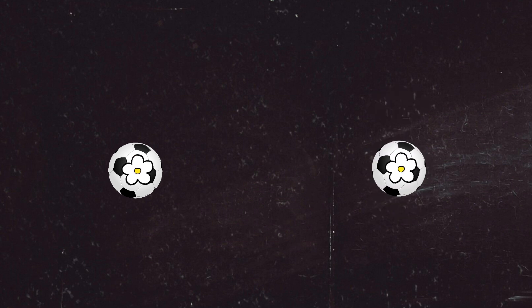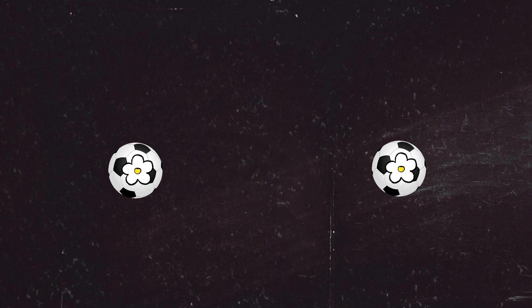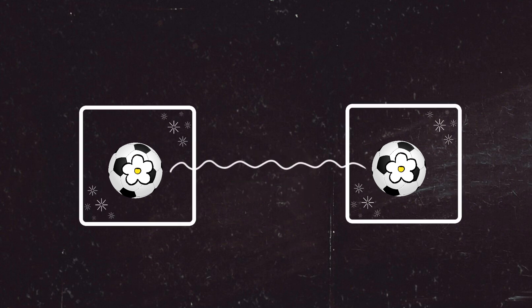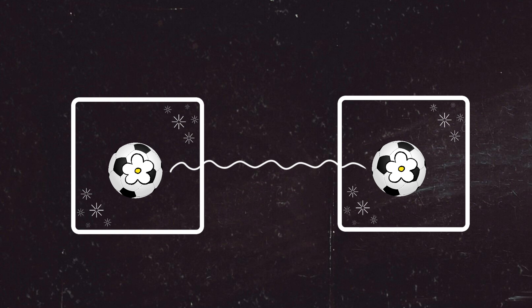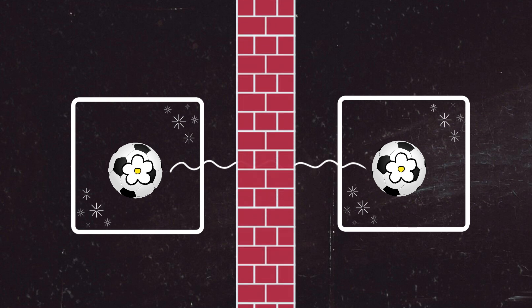Now, if you put a flower on one of the footballs, the other football will also be a flower, as they're entangled. They are equal even if we put a box in the way to separate the footballs. As one of the footballs has a flower, so will the other as they're entangled.